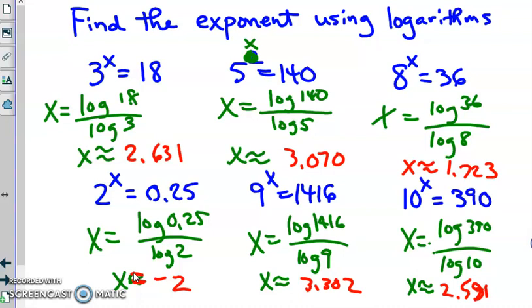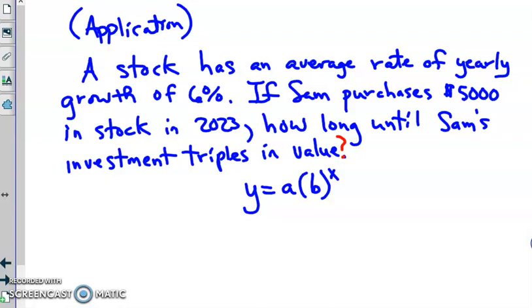So the next episode of problems, so here's an application problem. Stock has an average yearly growth of 6%. If Sam purchases $5,000 stock in 2023, how long until Sam's investment triples in value. So I actually had to set the problem up, and then from that try to find the time, how long, and how long is our x. Turn the video back on and you'd like this information, but turn the video back off and do the problem on your own to begin with, but it means we'll give you a way to help you.